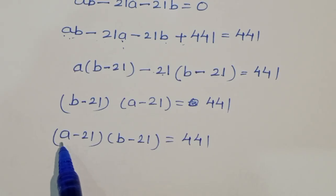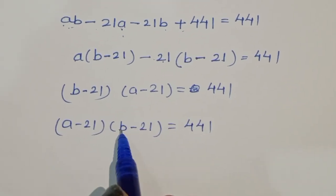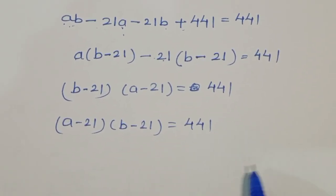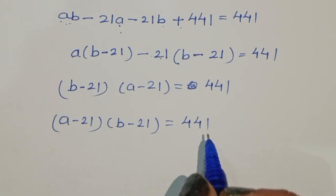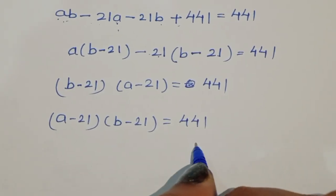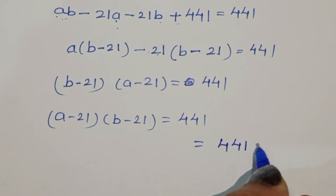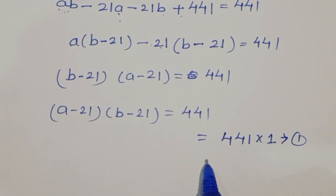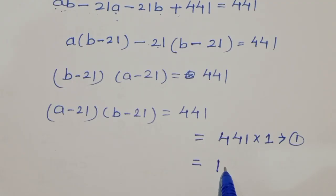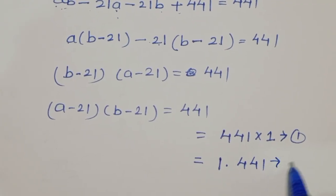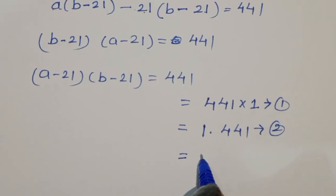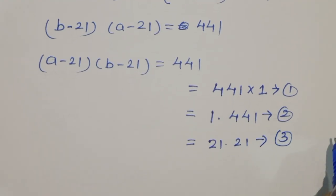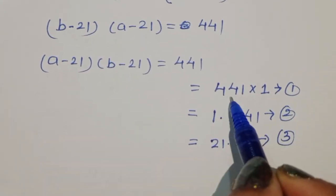So we can write (a minus 21) times (b minus 21) is equal to 441. Now we need the factor pairs of 441. The factors are: 441 times 1, 1 times 441, and 21 times 21. So we have three cases to solve.